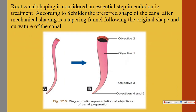Root canal shaping is an essential step in endodontic treatment. According to Schilder, the preferred shape of the canal after mechanical shaping is the tapering funnel shape. Schilder put forward five objectives for successful endodontic treatment. The first objective: make the preparation match the final shape.